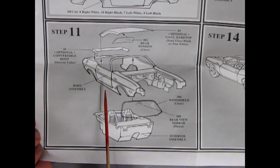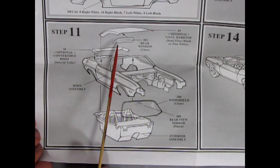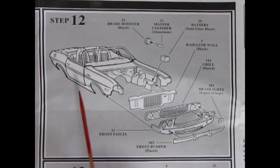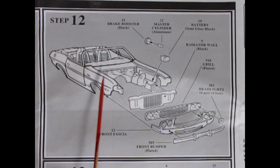Now step 11 here is where you decide if you want to have this as a convertible. Or to put on the optional vinyl hard top. And then our windshield will pop in place. If you want the hard top. There's a rear window that goes in there too. And then our interior will pop up inside. And here's step 12 with our body more or less together.